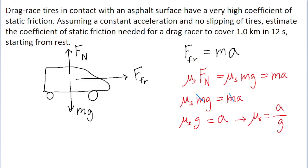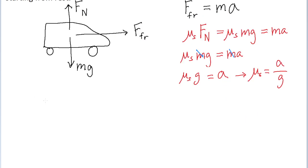But we also need to figure out the car's net acceleration in the horizontal direction. We're told that the car covers 1 kilometer in 12 seconds. So we can use this information, along with our kinematics equations, to find out what the car's acceleration actually is.